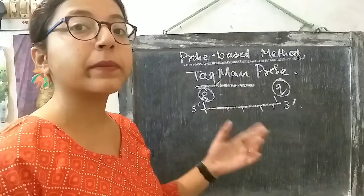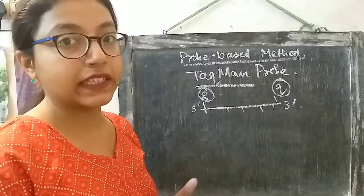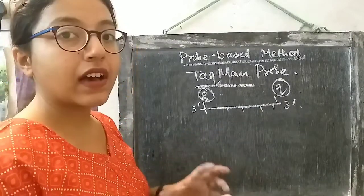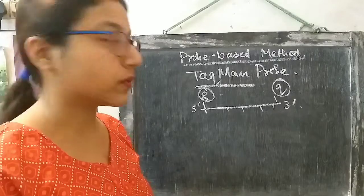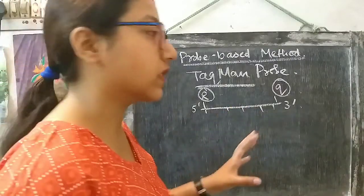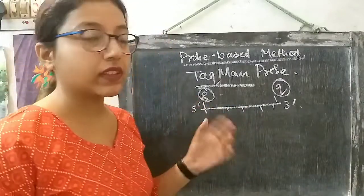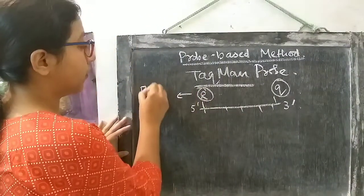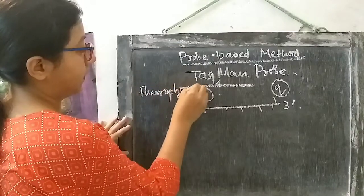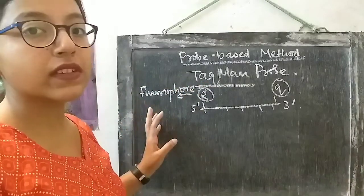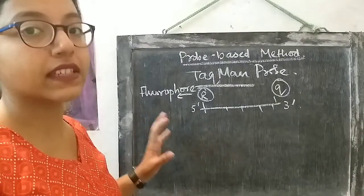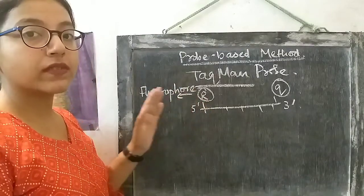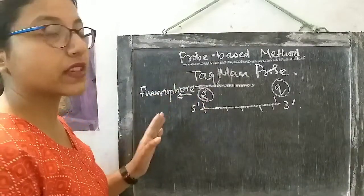This oligonucleotide will be complementary to the template DNA. Now, coming to the function of the reporter and quencher — the reporter is basically a fluorophore, which means it will produce fluorescence, and this fluorescence is the signal that is detected. So when this reporter produces fluorescence, that fluorescence is detected.